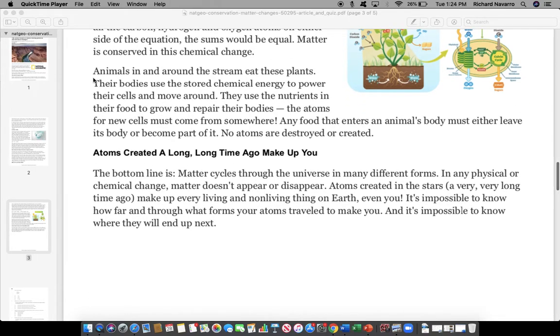Animals in and around the stream eat these plants. Their bodies use the stored chemical energy to power their cells and to move around. They use the nutrients in their food to grow and repair their bodies. The atoms for new cells must come from somewhere. Any food that enters an animal's body must either leave its body or become part of it. No atoms are destroyed or created.